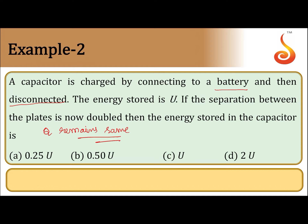Charge remains the same. The energy stored when charged is u. Now the separation between the plates is doubled — what happens to the energy stored? When you double the separation, the capacitance changes, and therefore the energy stored will also change. Charge remains constant throughout.